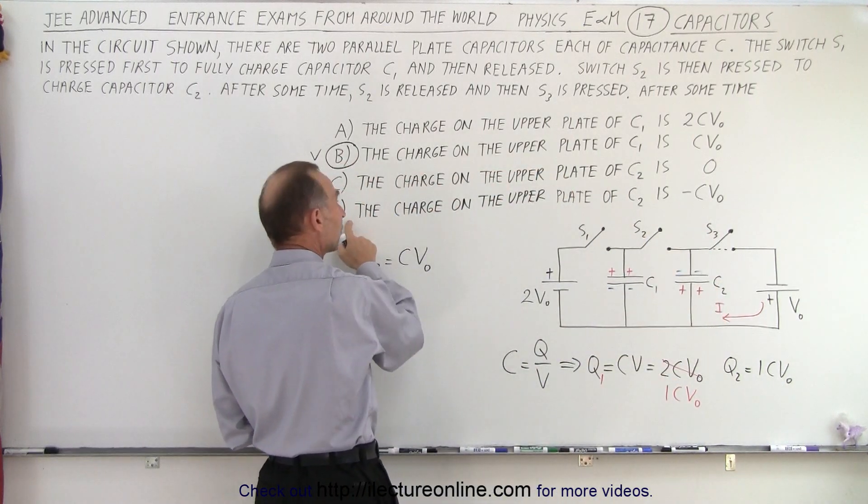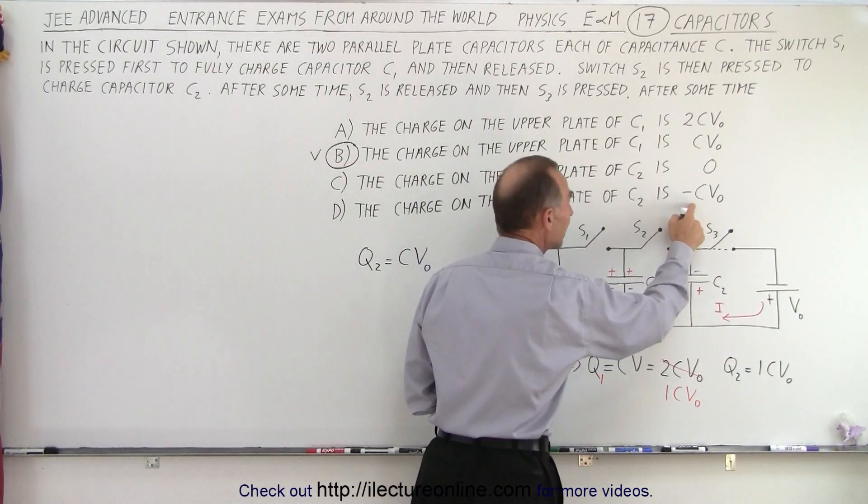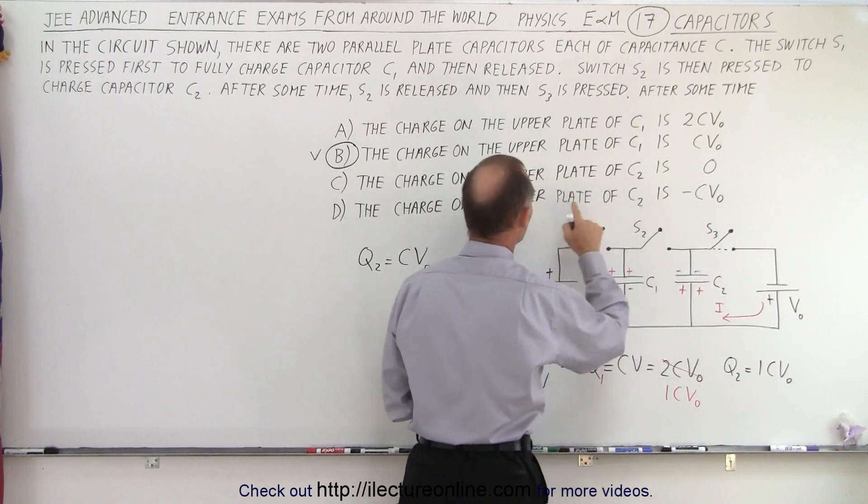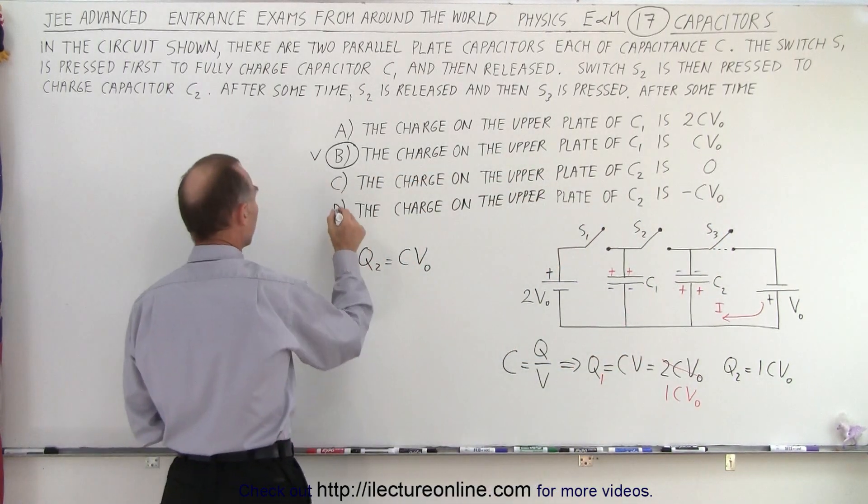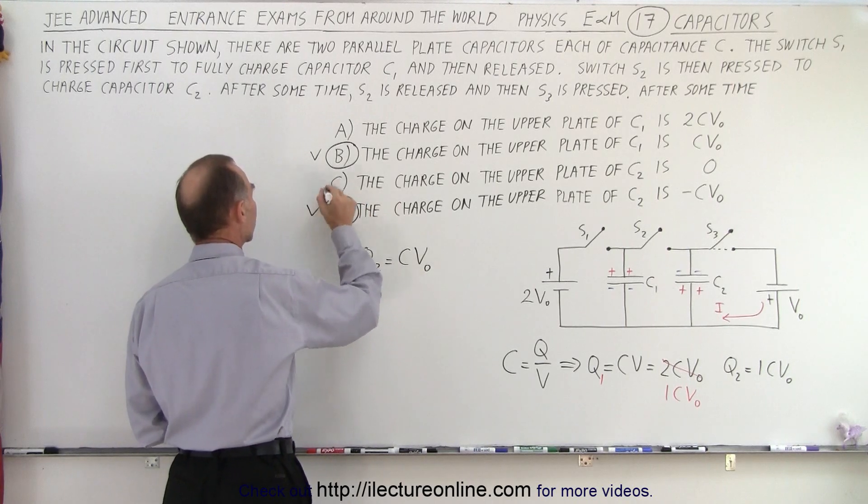And if we take a look at the C and D answers, you notice that D has the negative CV₀ because we're talking about the upper plate of the capacitor which is now a negative charge. So D is the correct answer there.